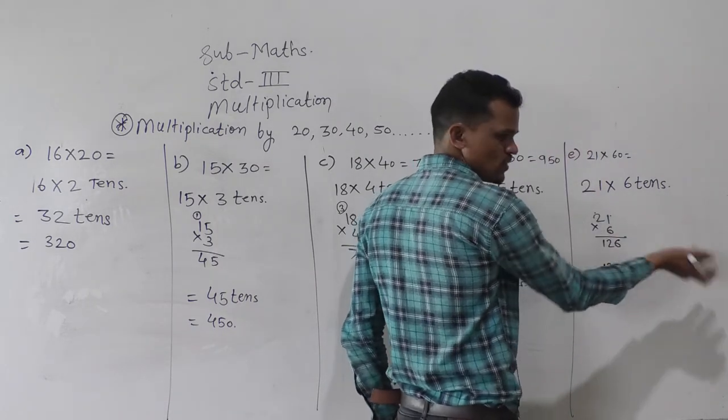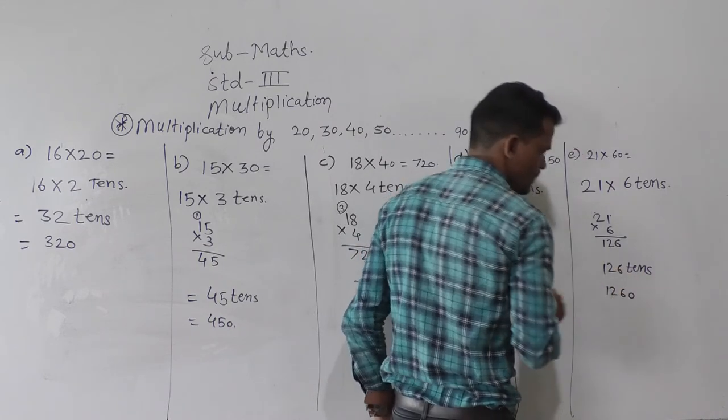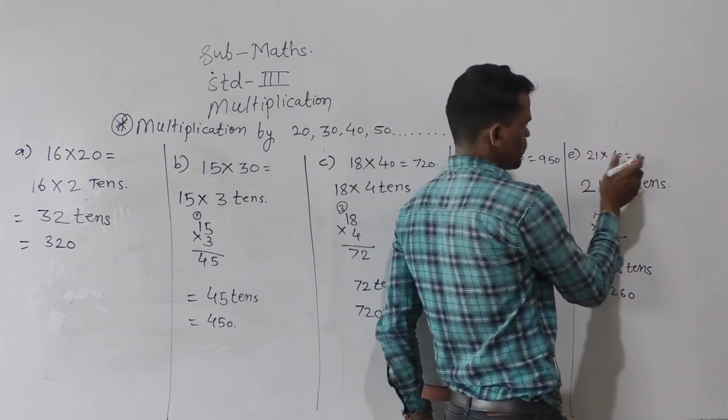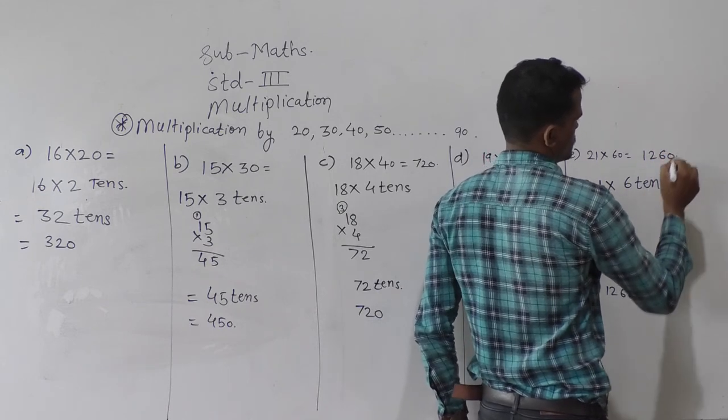So tens means add 0 after that number 126. 1260 is the product of 21 and 60.